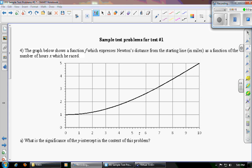Part A: What is the significance of the y-intercept in the context of this problem? So the y-intercept in this case is (0, 1). Zero is the time since the race started, and 1 is distance from the starting line.